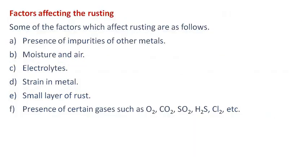Factors Affecting Rusting: Some of the factors which affect rusting are as follows — presence of impurities of other metals, moisture and air, electrolytes, strain in metal, and a small layer of rust.